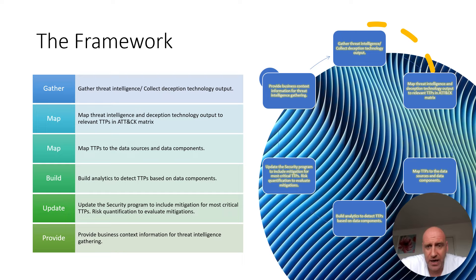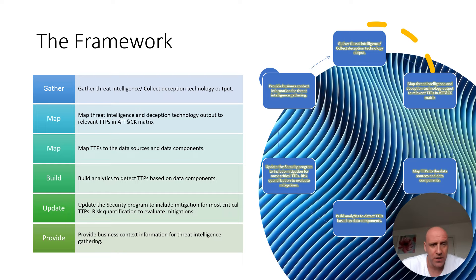This is the framework — a six-step process that operates as a continuous feedback loop. The first step is gathering threat intelligence, or after running through cycles, enriching intelligence together with deception technology output. The framework is adaptable regardless of tools or organizational structure. Some organizations have dedicated threat intelligence teams; others might start with Google — for example, searching threat reports for a UK financial organization to identify cyber crime gangs and APT groups that would target it.